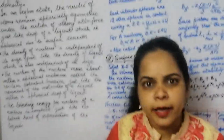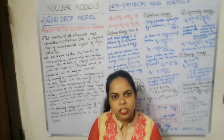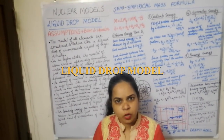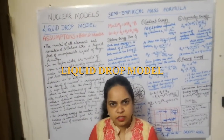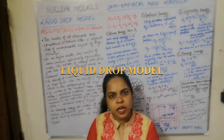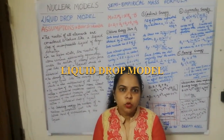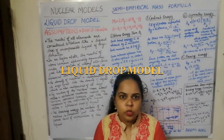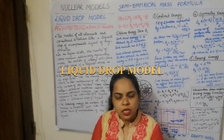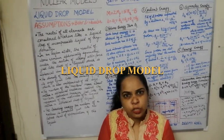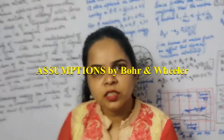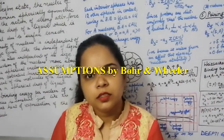The liquid drop model was proposed by Bohr and Wheeler in 1939. They considered that the nucleus is analogous to a liquid drop — an incompressible liquid having very high density. Just as in a liquid, molecular forces are saturated and do not depend upon the size, but only on the number of molecules. Similarly, nuclear forces are also saturated and depend only on the number of nucleons in the nucleus.